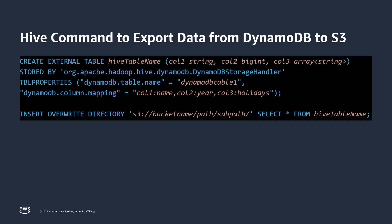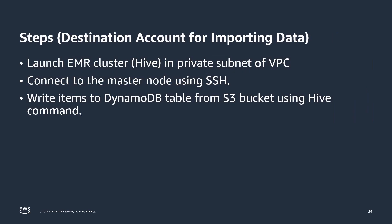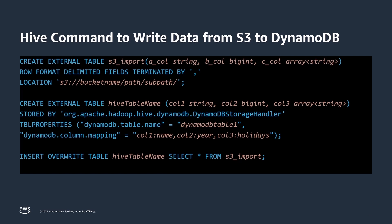This is the sample Hive command that exports the DynamoDB table to the S3 bucket in the destination account. Once the data is exported, connect via SSH to the master node of the EMR cluster running Hive in the destination account and use a Hive command to import data into an existing or new DynamoDB table in the destination account. This is the sample Hive command to write data from S3 to DynamoDB.